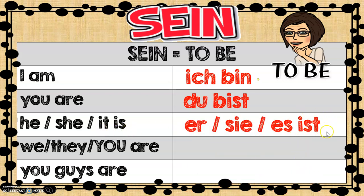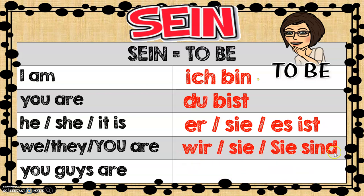That one almost looks just like the English. 'He is' — 'er ist,' 'she is' — 'sie ist,' 'it is' — 'es ist.' 'We are, they are, you formal are' — 'wir sind, sie sind, sie sind.' 'You guys are' — this is the tricky one — 'ihr seid.' Remember, when you have an IE or an EI, you always hear the second vowel: 'seid.'